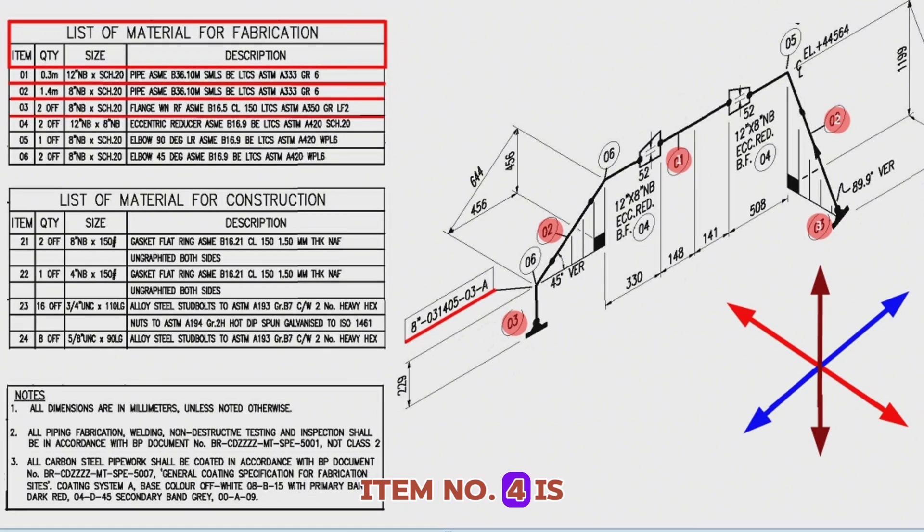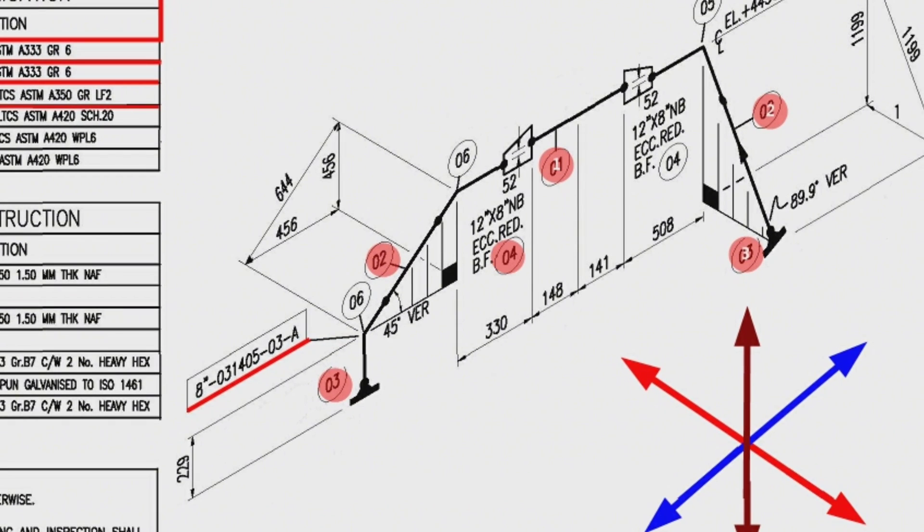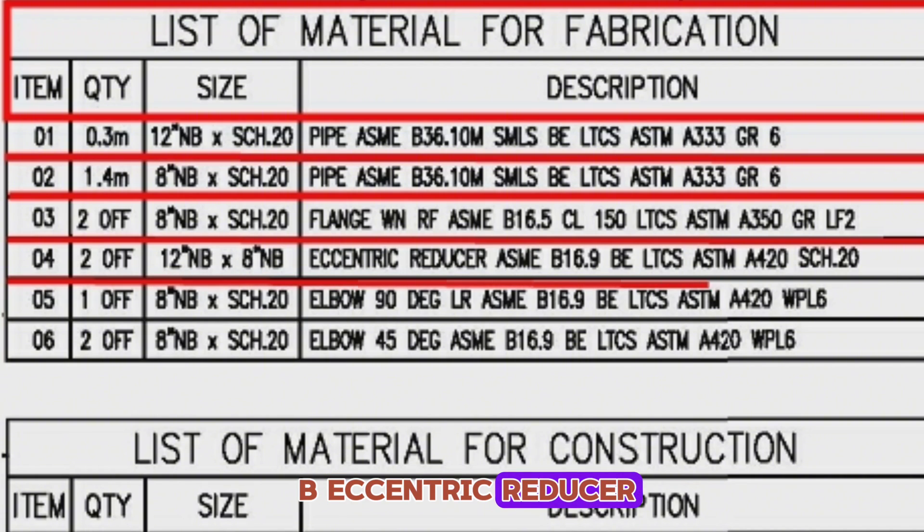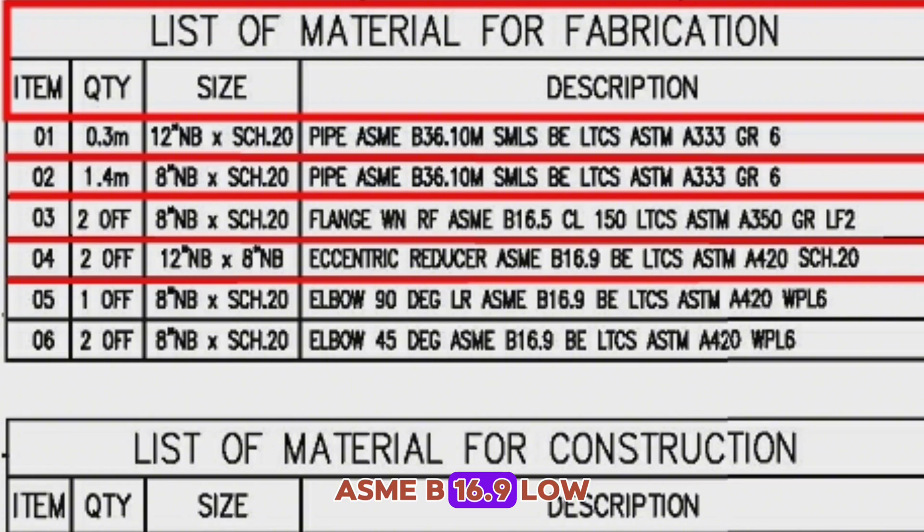Item number 4 is shown in two places in the isometric drawing. Let's look at the bill of material. Item 4, quantity is 2-off, size is 12-inch NB by 8-inch NB, eccentric reducer, ASME B16.9, low-temperature carbon steel, ASTM A420, schedule 20.